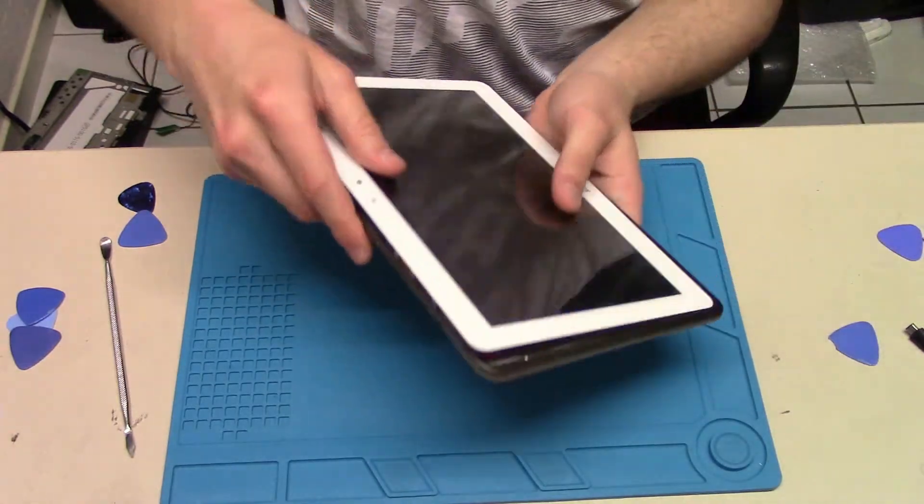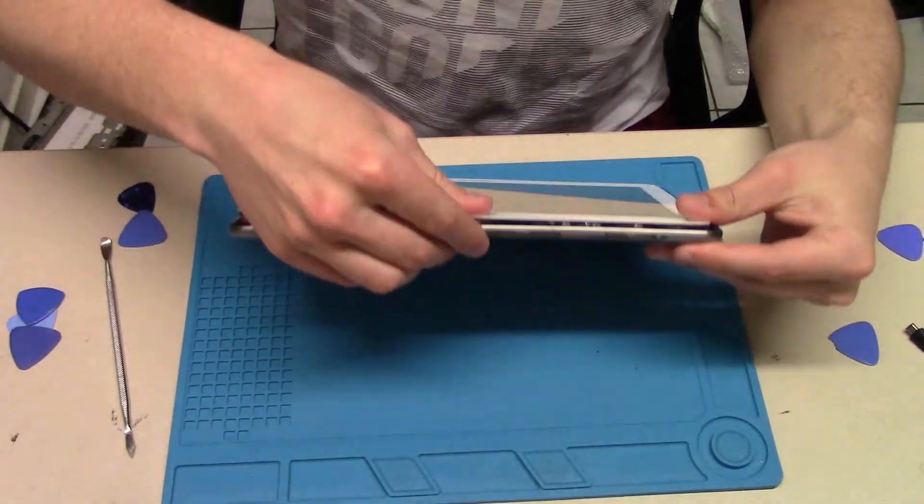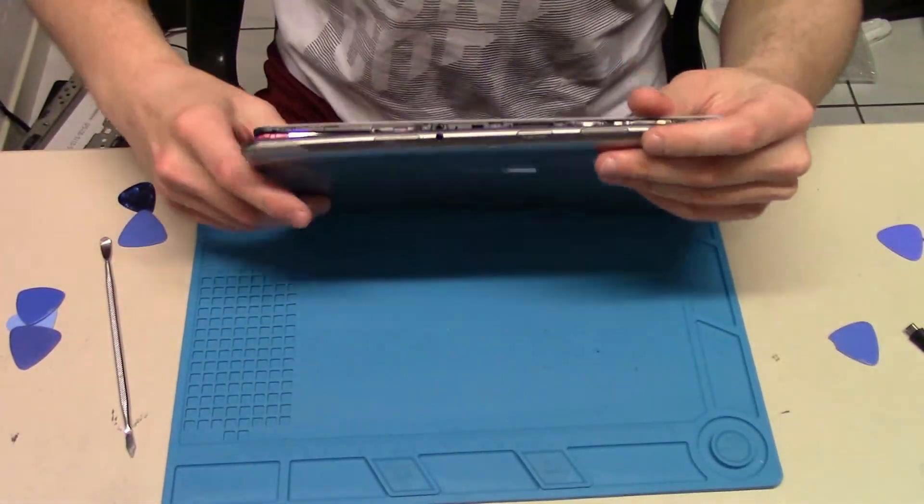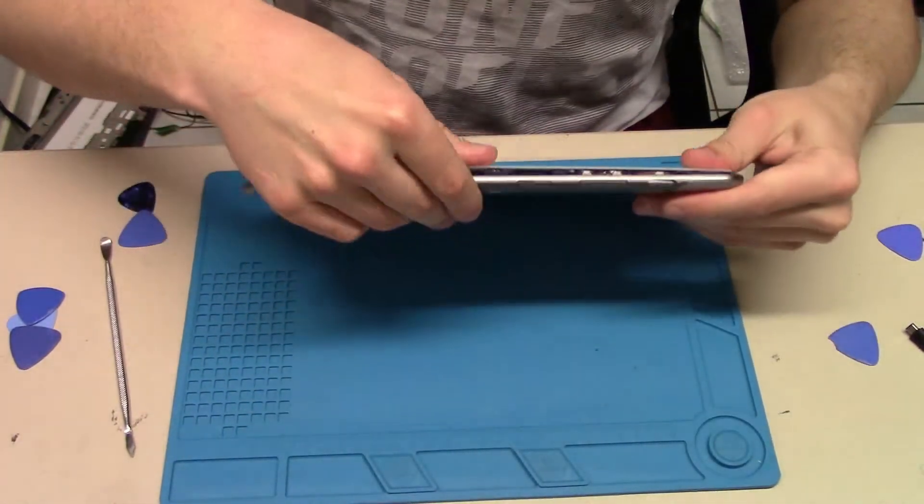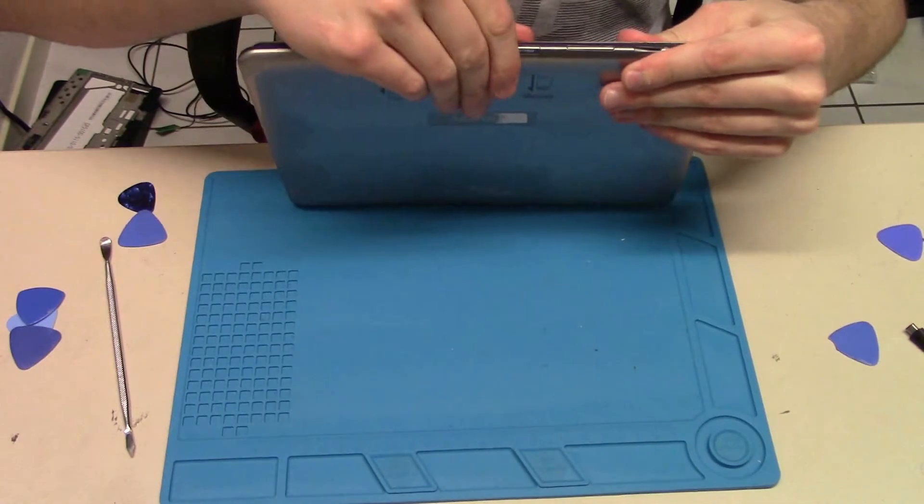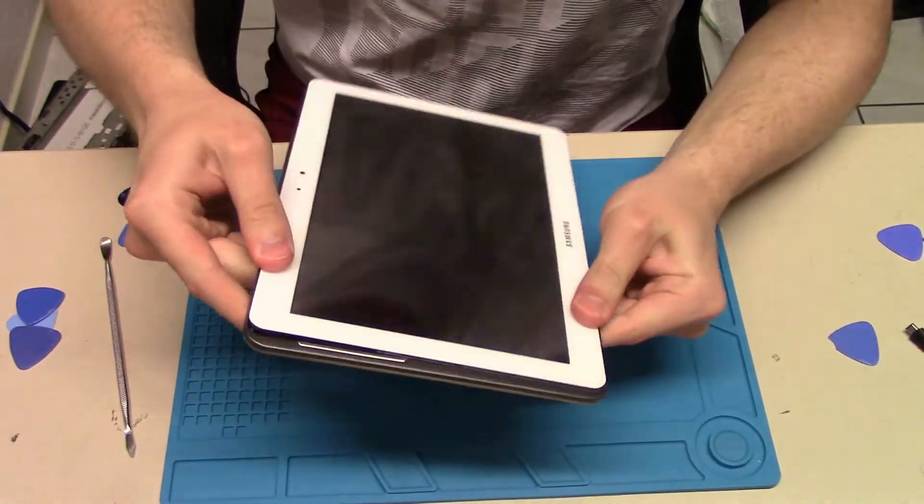Now we try to install the new back housing. It's very easy, we need only to clip the display frame inside the back housing. Some clips will be a little bit difficult but it's very easy.